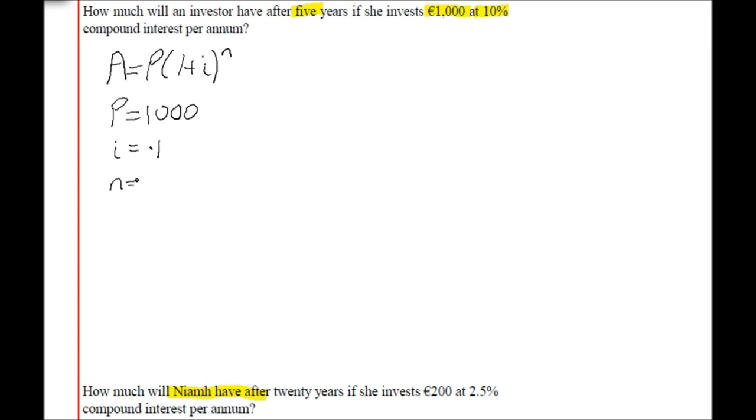And n is the number of time periods. The number of time periods is 5 for five years. So try doing the same for the question at the bottom.